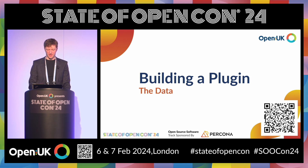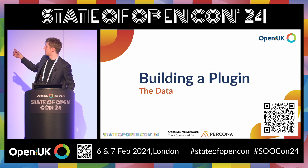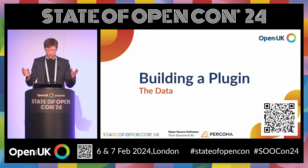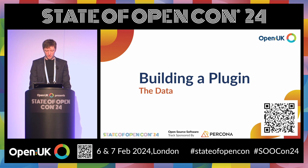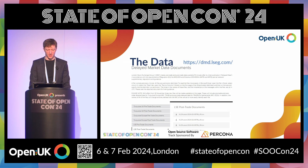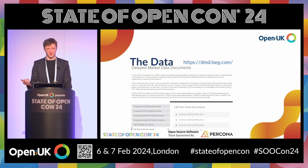Now that we have a high-level understanding of how the plugins work, let's take a look at the data. The QR code, by the way, has links to the repo, the data, and a bunch of other helpful stuff. To keep this talk on time, we're only going to look at one of the endpoints available from the London Stock Exchange delayed market data — this is the data they're legally required to provide at a 15-minute delay. You can implement the others; I'll be adding them to the project repo so you can take a look at those as well.